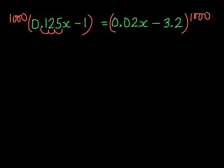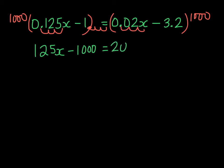That will give us 125x as our first term. The decimal on 1 is to its right, so we will move it 3 times, and we will get negative 1,000. Then we will get 20x. And our last term will be negative 3,200. Now we have no decimals, and we can solve as we usually do.